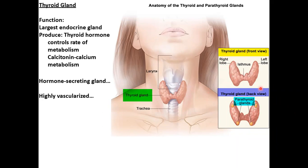The anterior view of your thyroid gland shows the left lobe, right lobe, and isthmus. On the posterior view, you can see the parathyroid glands. These are the four most common locations for parathyroid glands, but they can end up in different places because, like the thyroid gland, the parathyroid glands actually migrate down to where they end up.